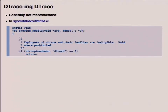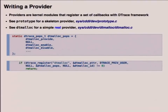Providers are kernel modules that register a set of callbacks within the DTrace framework. There's a prototype provider which provides a simple skeleton showing the key things you need to add. For a real provider, look at dtmalloc, which has an array of provider ops. The key ones you have to define are dtmalloc_provide() which defines the specific probes, and dtmalloc_enable() and dtmalloc_disable() for enabling and disabling probes. dtrace_register() is essentially how you register the provider ops.